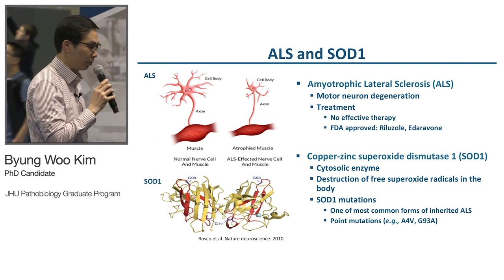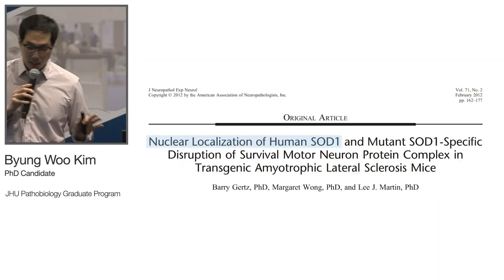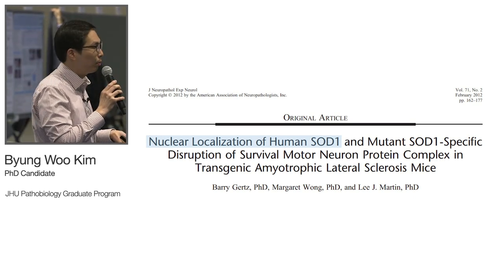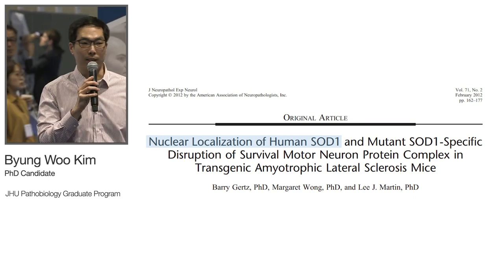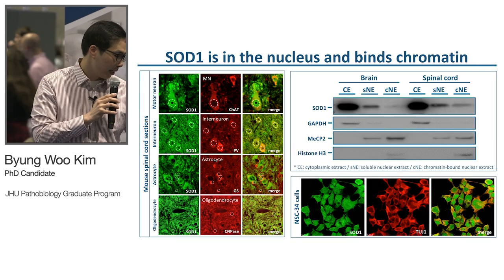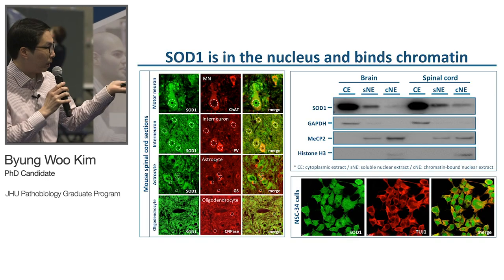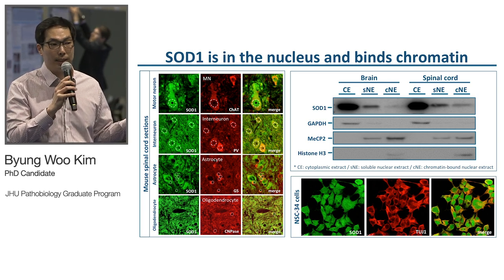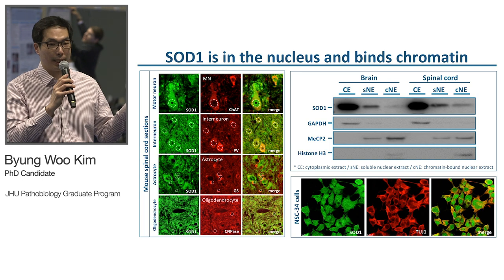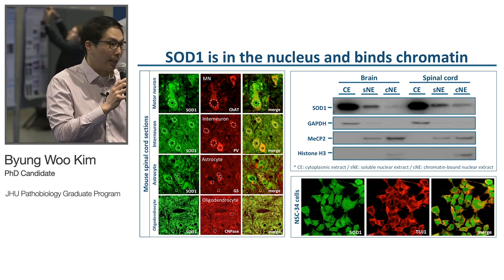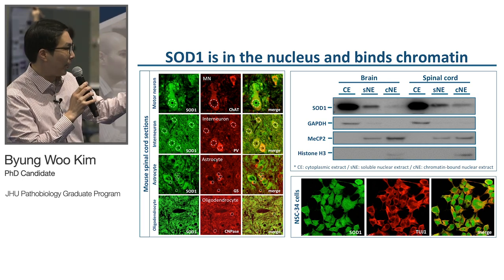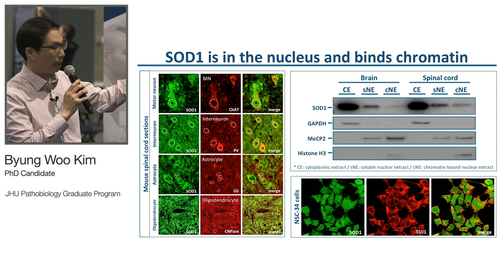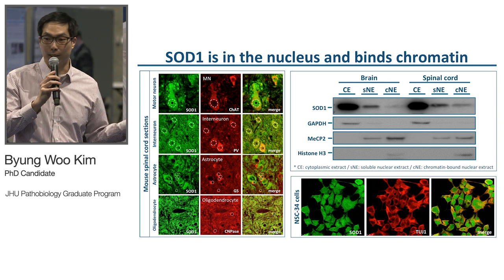Although SOD1 is known as a cytosolic enzyme, in 2012 we published a paper showing there is a nuclear aspect of this SOD1 protein. We confirmed that using mouse spinal cord sections and NSC34 cells, which are mouse spinal cord motor neuron-like cells. We did staining with SOD1 antibody and showed that in spinal cord sections, SOD1 is present in the nucleus of motor neurons, interneurons, astrocytes, and oligodendrocytes.